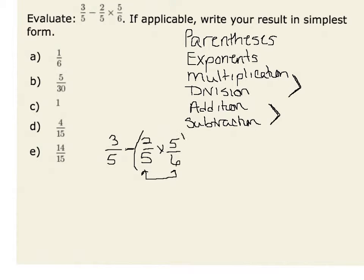Therefore, we could put our parentheses around 2/5 times 5/6 to illustrate that. When we multiply 2/5 times 5/6, we can multiply the numerators and denominators.